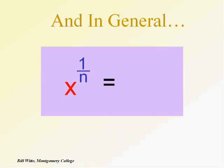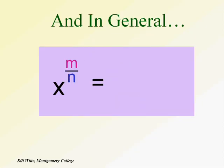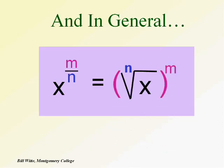So in review: rational exponents can be written as x to the 1 over n, which means the nth root of x. And if we have a value in the numerator m, x to the m over n really means the nth root of x to the mth power. You should be able to go back and forth between those two types of notation.